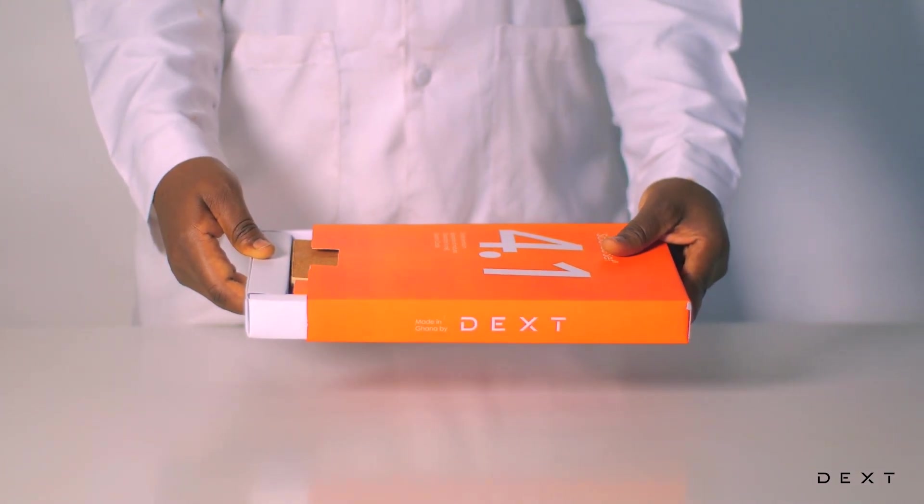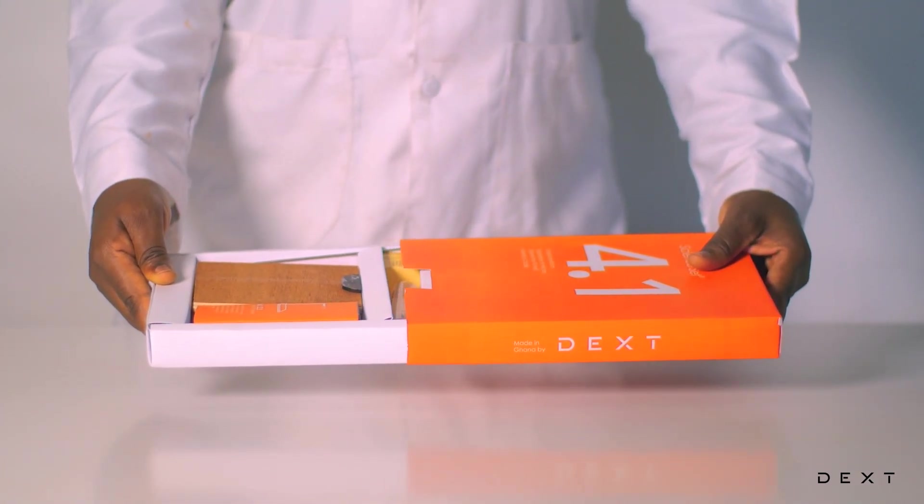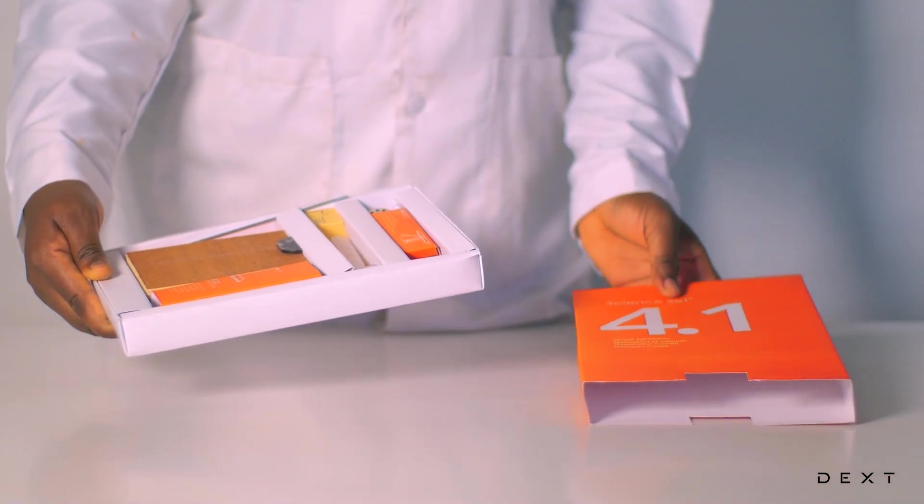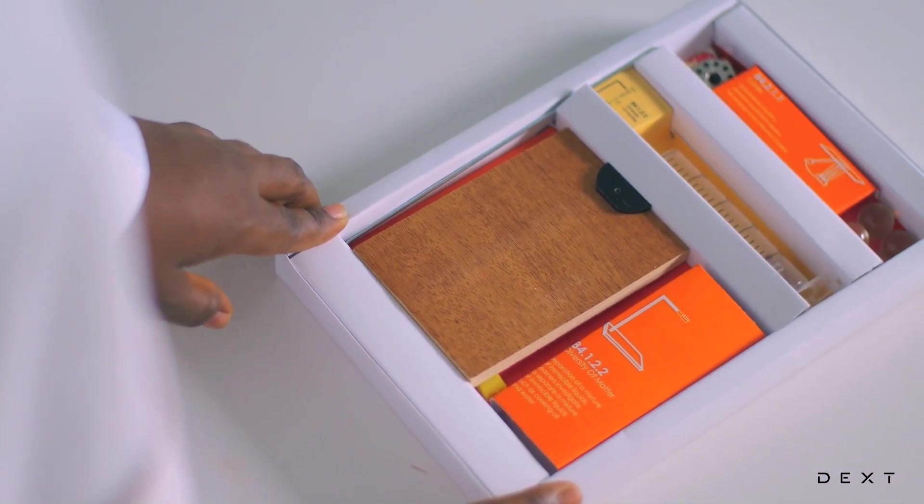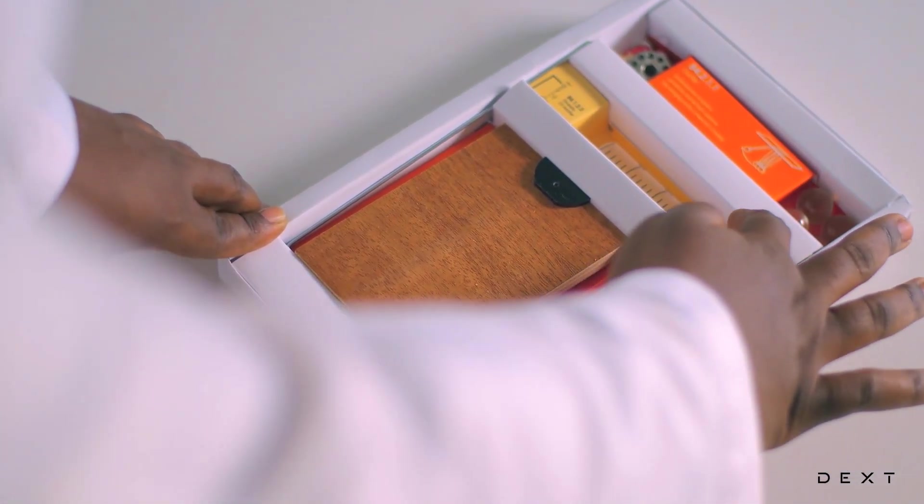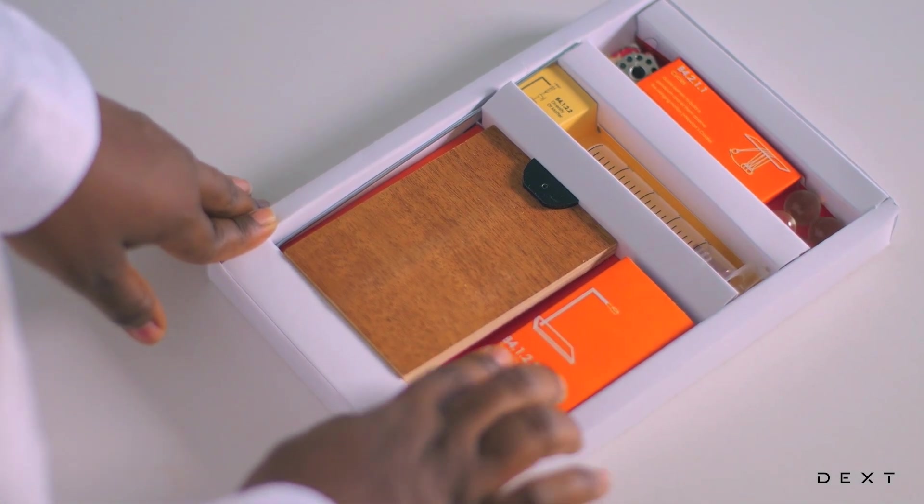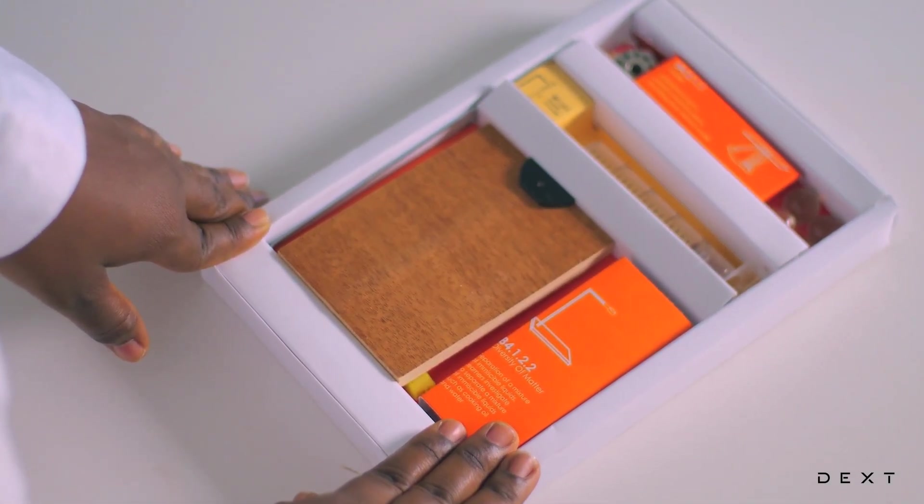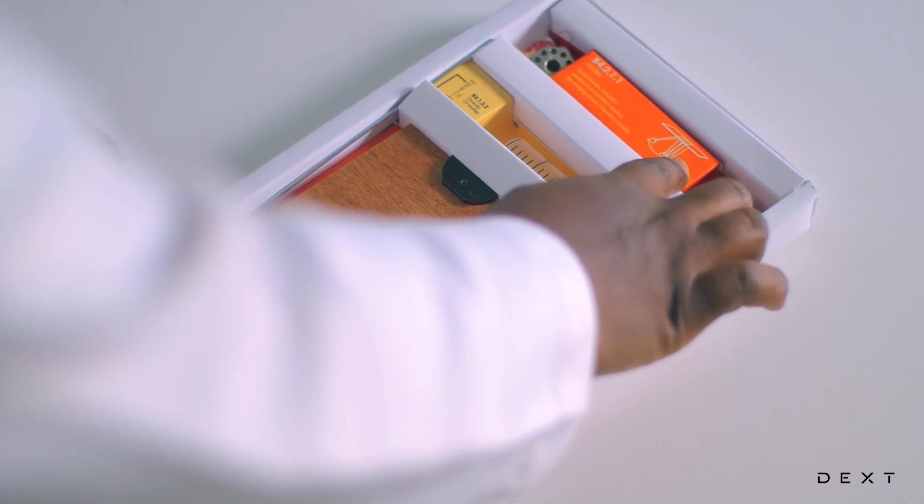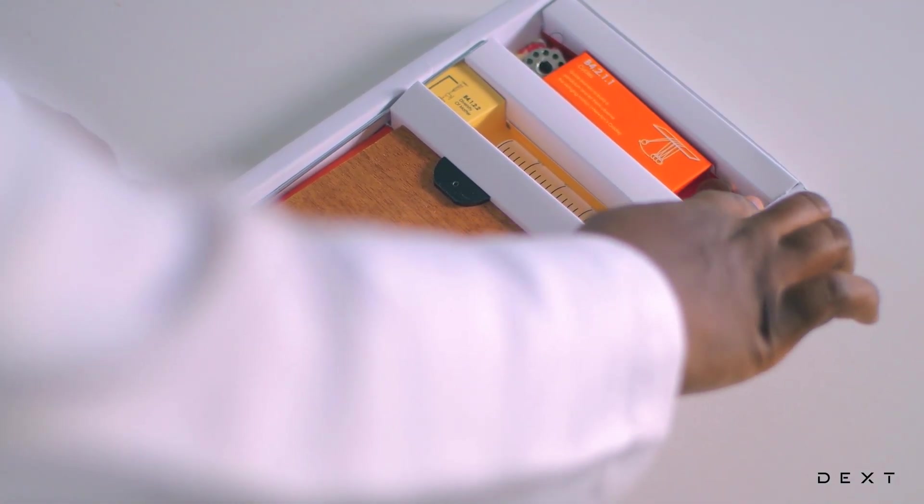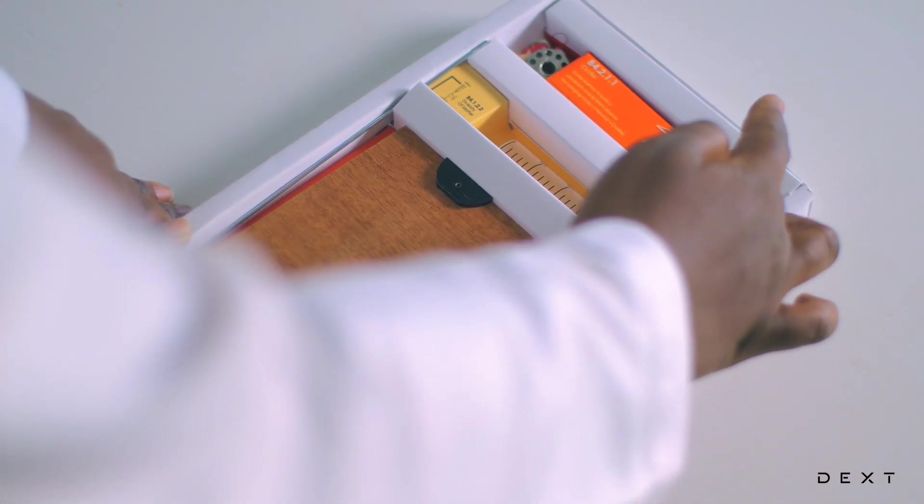Let's open up our sets. This is the new packaging for the DextSignSet 4.1 set. So these two compartments are for the separation of liquids activities and we have this compartment for cycles that is the simple pendulum and the Newton's cradle.